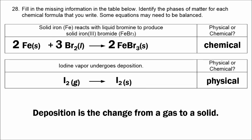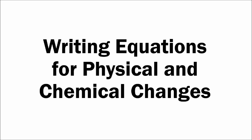These 8 examples — 4 of them being physical changes and 4 of them being chemical changes — hopefully help you understand the process of writing equations for both physical and chemical changes. Thanks for watching.